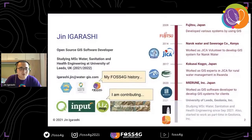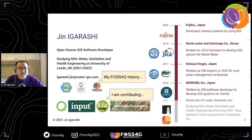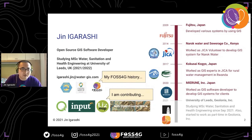First of all, who am I? I am an open source GIS software developer for more than 10 years. First, I worked in Japan, and I started to work in Kenya and Rwanda from 2014 to 2019. At that time, I was involved in water supply projects of JICA, Japan International Cooperation Agency.